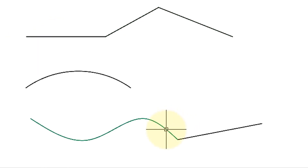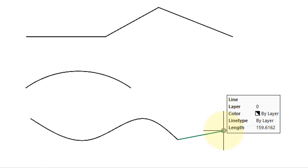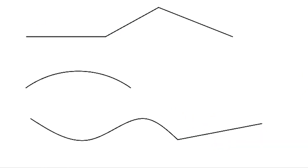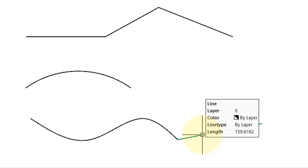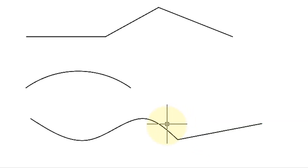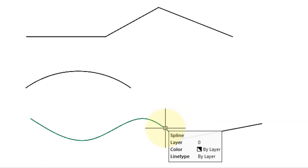Here I've drawn a spline and attached a line to the end of it. Let's see what happens with the Join command. I select the two of them, press Enter, and the tooltip tells us that the two haven't come together.